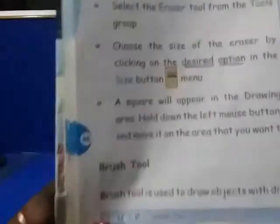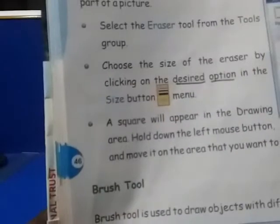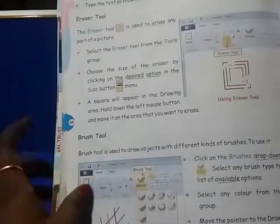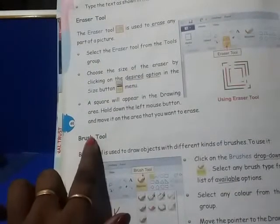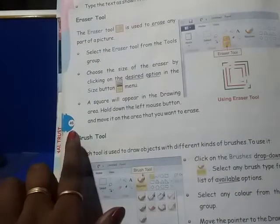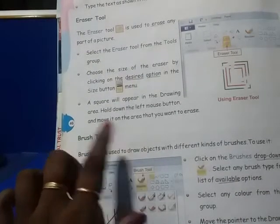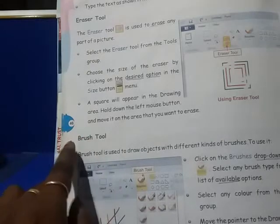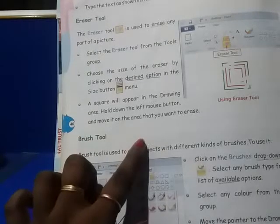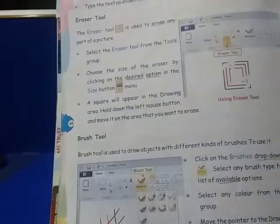Students, now open your book, page number 46, brush tool. Write it over here: today's date, day, and CW. Aap yehaan pe aaj ki date daalenge, day daalenge aur CW likhenge.